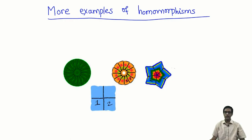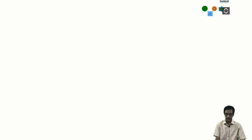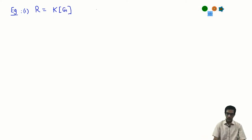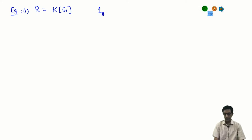Let us talk about a few more examples of homomorphisms. We saw a few examples already. Here is an example with the ring R being the group algebra. Recall that the group algebra of a finite group, or the group ring of a finite group over a field k, is, as a vector space, elements which look like 1 sub g — these were the basis elements as g runs over the group G.